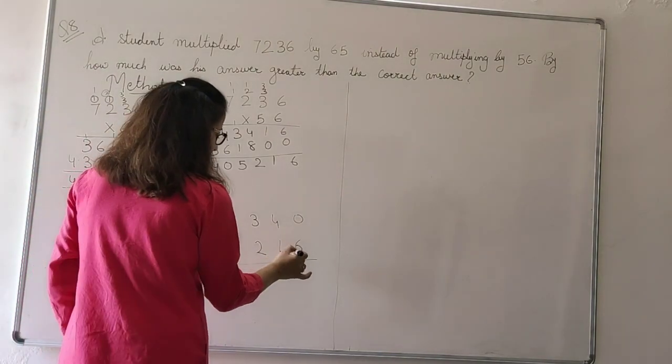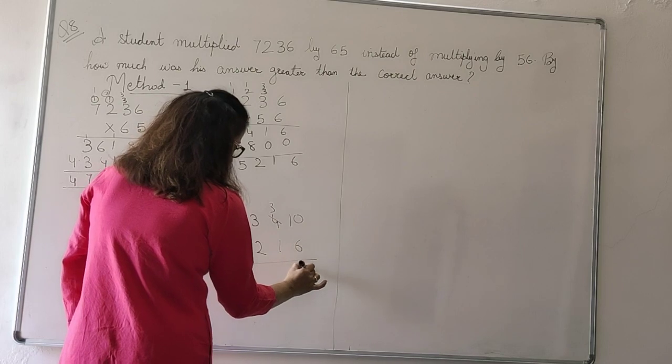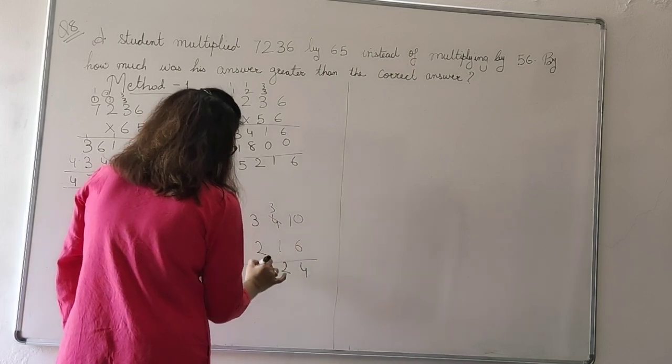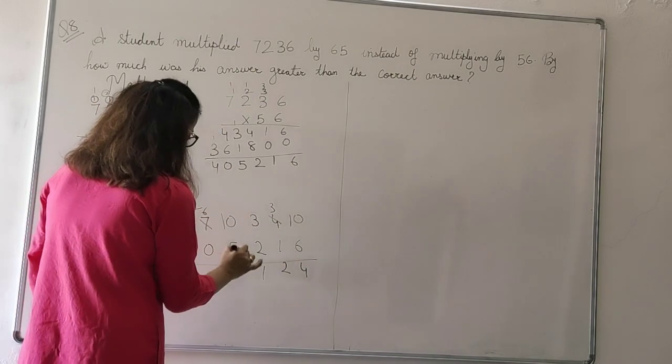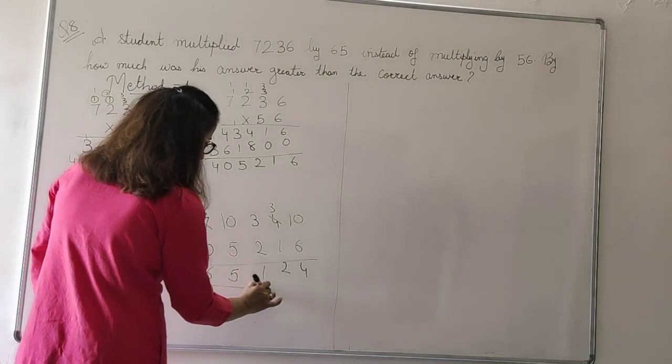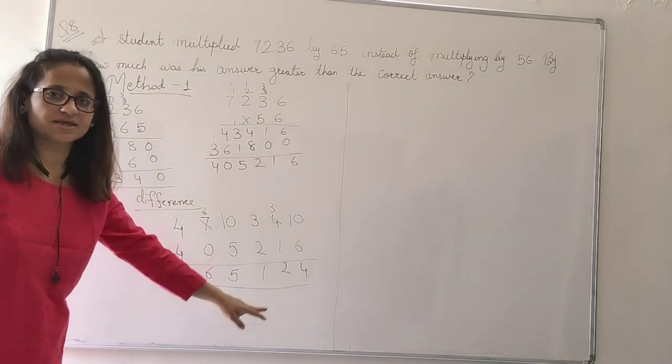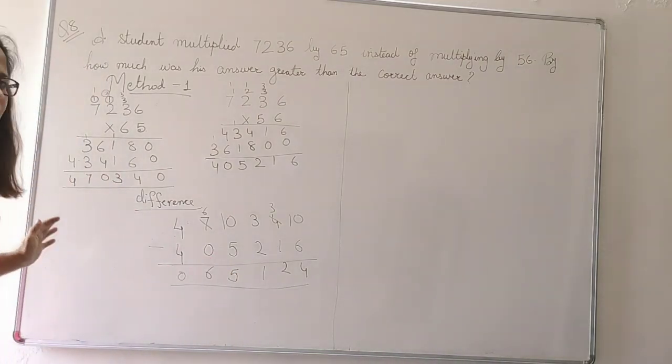Difference: 4, 70, 340 minus 4, 05, 216. I cannot subtract 6 from 0, so I will borrow. So how much was the answer greater? 65, 124. Now this is a very big method.